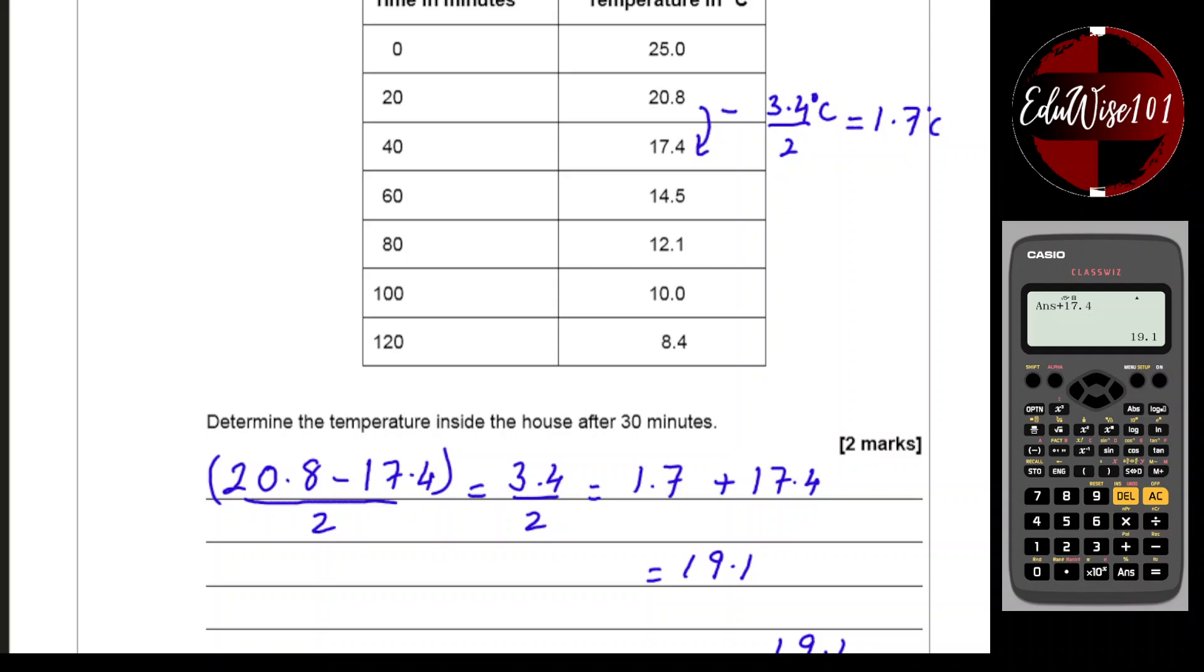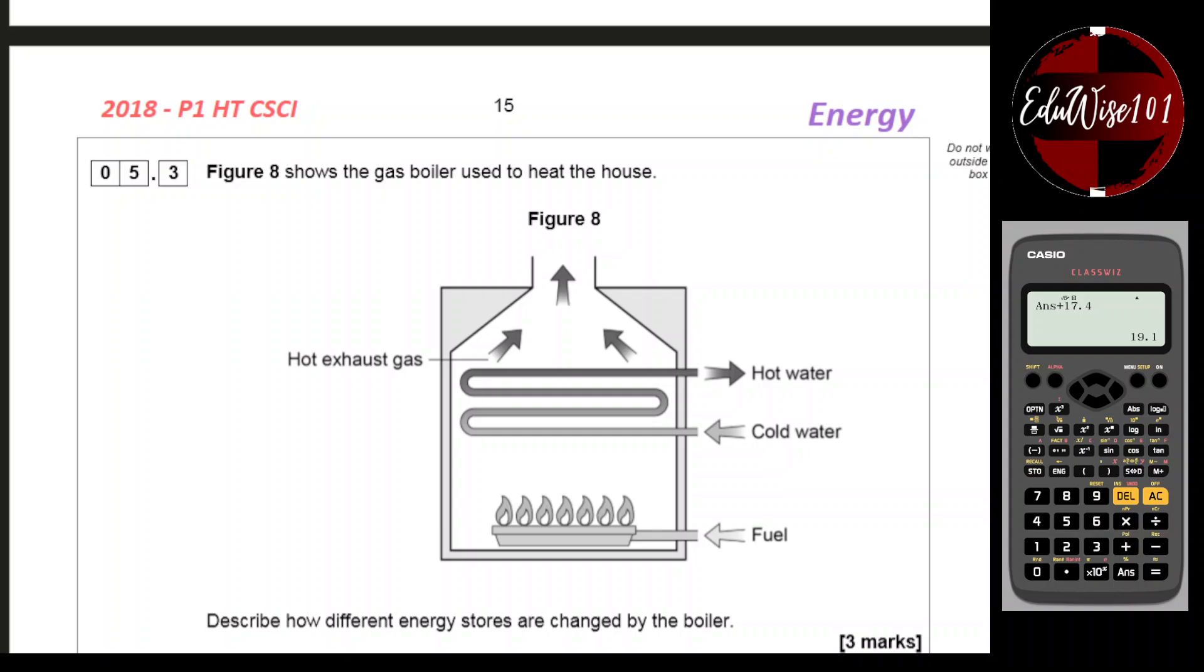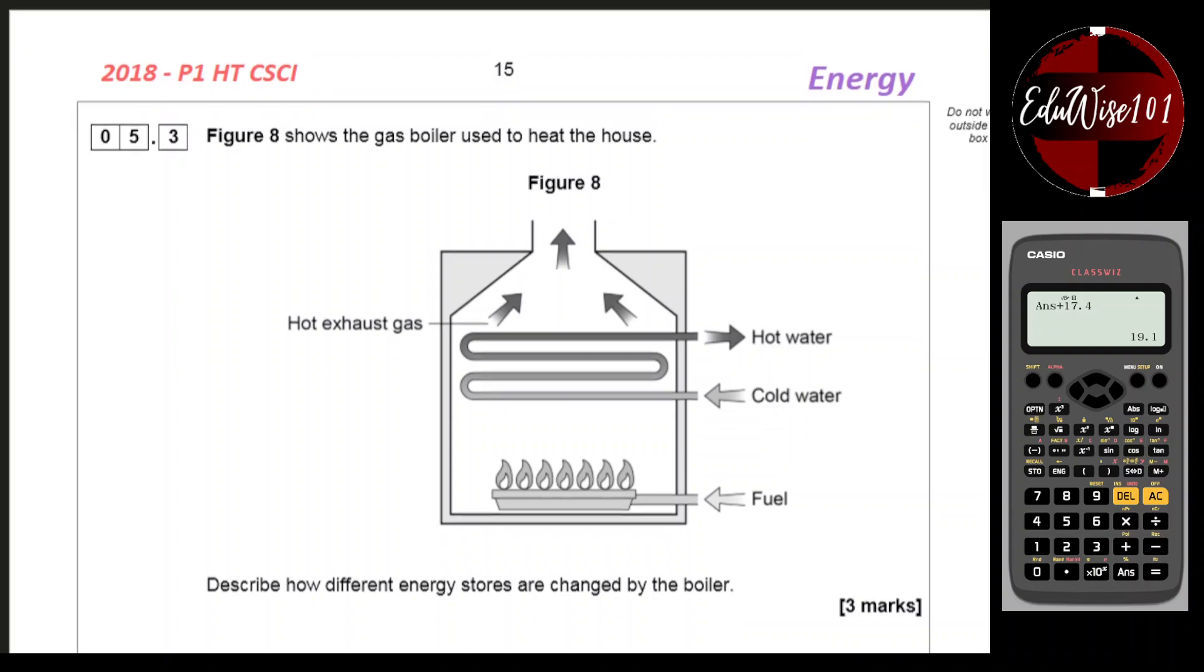Next question. Question 5.3. Figure 8 shows the gas boiler used to heat the house. We have the fuel coming in and there's a flame. The hot water goes in, gets hot. The hot exhaust gas as it rises, it heats up the tubes and the hot water flows out. So describe how different energy stores are changed by the boiler.